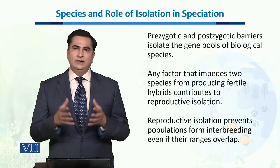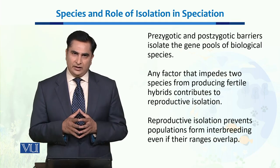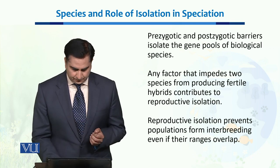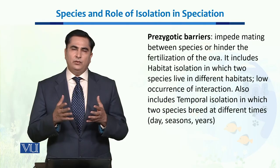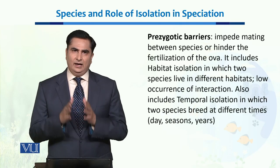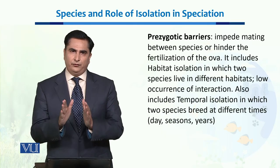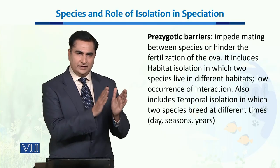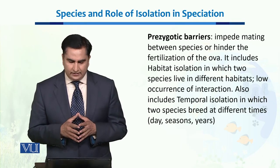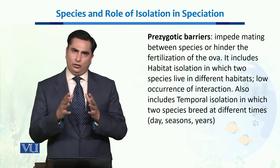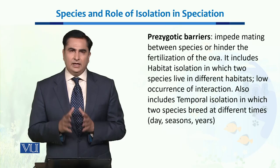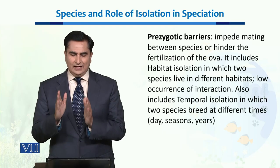Any factor that impedes two species from producing fertile or hybrid offspring contributes to reproductive isolation. Reproductive isolation is the main factor which prevents populations from interbreeding and having a flow of genes. Pre-zygotic barriers are barriers that act before the formation of zygotes — they impede mating between species or hinder the fertilization of the ova.